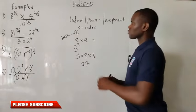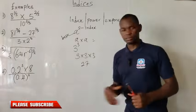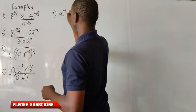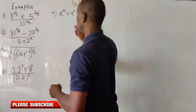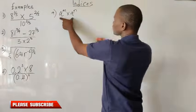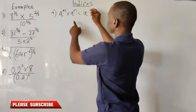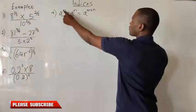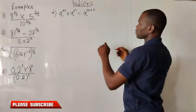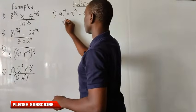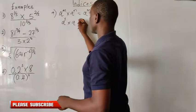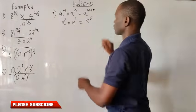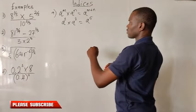Let's consider the laws of indices. The first we shall consider is the multiplication law: a raised to the power m times a raised to the power n. Each time you have the same base multiplying itself, all you need to do is add the powers, giving a raised to the power m plus n. For example, a raised to the power of 3 times a raised to the power of 2 gives a raised to the power of 5, because we add 3 and 2.